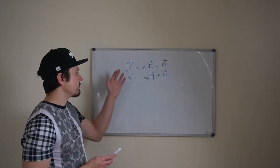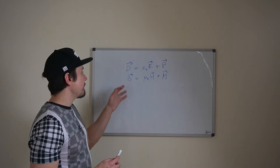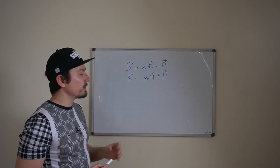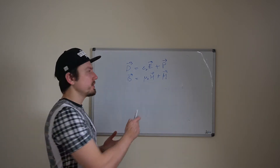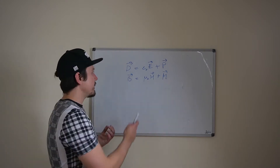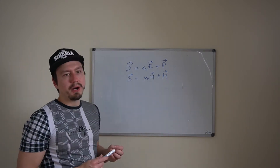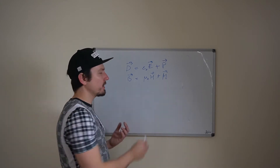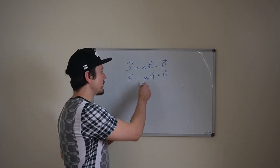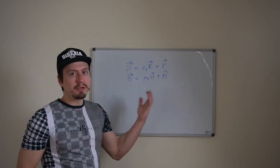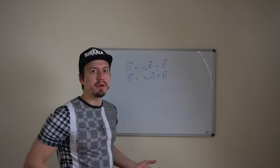As we define the terms of electric flux density and magnetic flux density, we can see those terms are really similar. Electric flux density is a combination of the vacuum response with polarization, multiplied by electric permittivity. Similarly, magnetic flux density is a multiplication of magnetic permeability with the vacuum response plus magnetization inside the material.